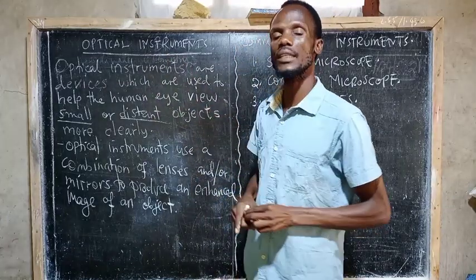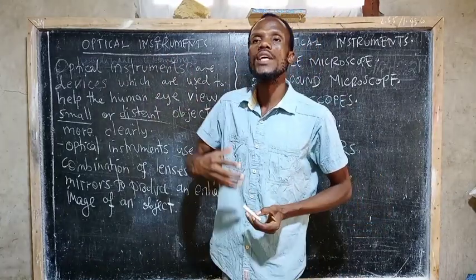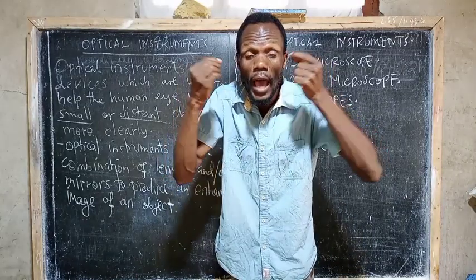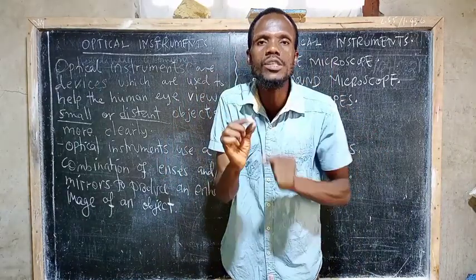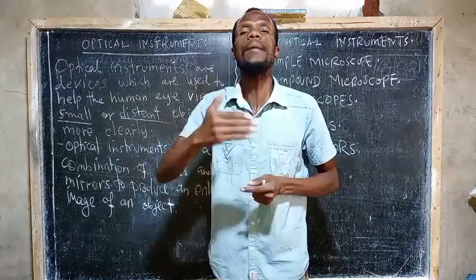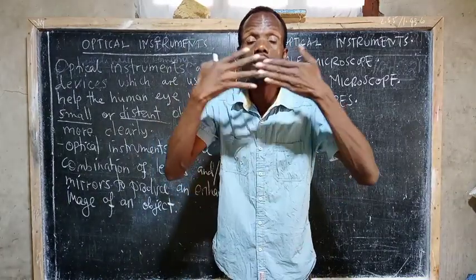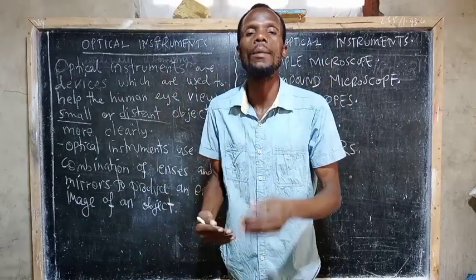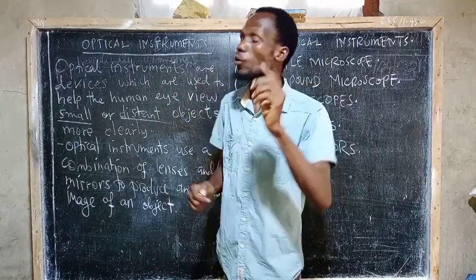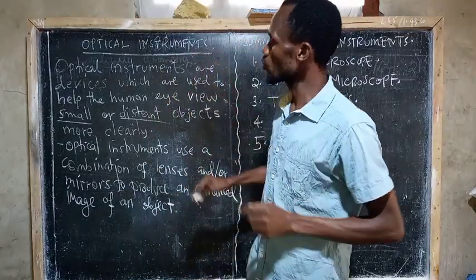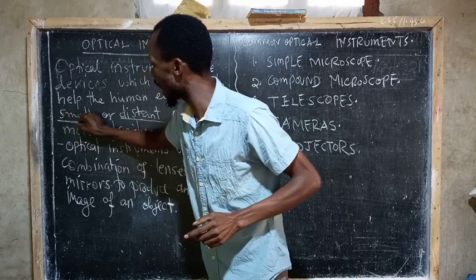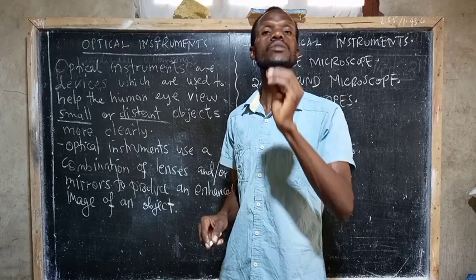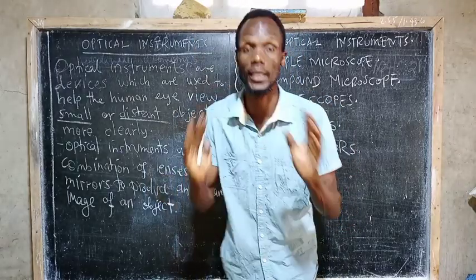Kwa hiyo, optical instruments inatuwezesha sisi kuona vitu ambavyo, kwa macho yetu ya nyama, ni vidogo sana tusingeweza kuviona. Ama vitu ambavyo viko mbali sana kiasi kwamba tusingeweza kuviona. Kwa kutumia optical instruments, tunaweza kuona vitu vidogo sana, na vitu ambavyo viko mbali sana kutoka kwenye usawa wetu, na tukaviona kama kawaida.